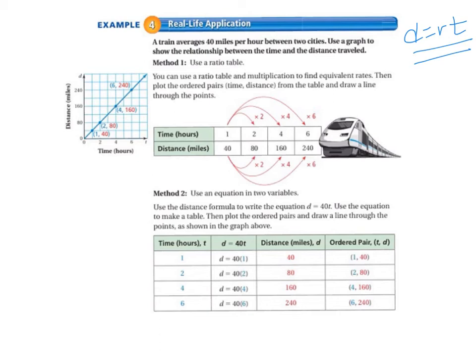So we're going to do this two different ways. Method one: we're going to use a ratio table. You can use a ratio table and multiplication to find equivalent rates. Then plot the ordered pairs, time and distance, from the table and draw a line through the points.